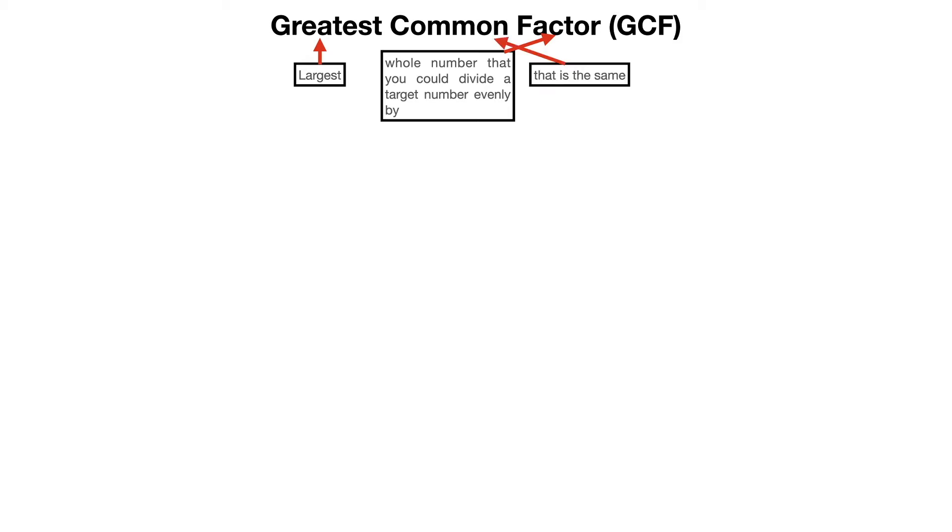And then finally, common, when we're talking about math, we're saying that's the same. So if we're finding the greatest common factor for a set of two numbers, we would be looking for the largest whole number you could divide a target number evenly by that is the same as another number. And so we'll look at an example of this right here.